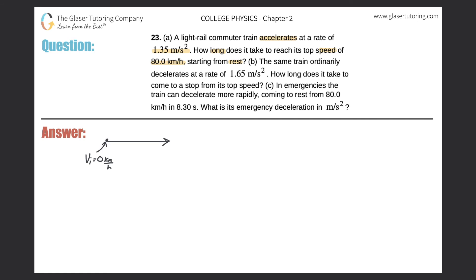I'll write the initial velocity in meters per second for now. It wants to know how long it takes to reach its final speed of 80 kilometers per hour, so we're solving for time. It also says the train is accelerating at 1.35 meters per second squared. So we know: acceleration, initial velocity, final velocity — and we're looking for time. Do we know a formula relating these four variables?